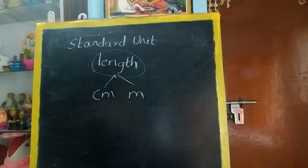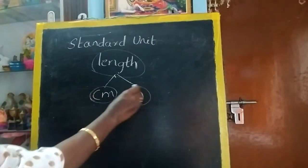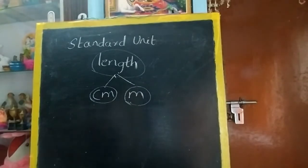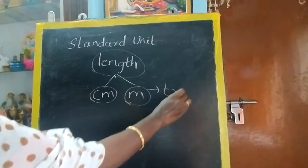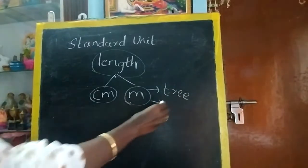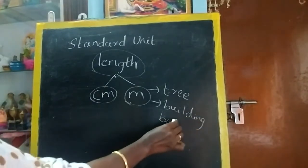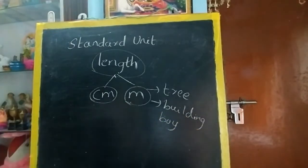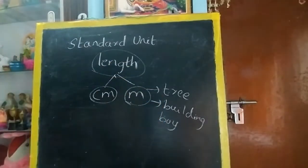Meter means you have to write m. You would have heard this — give me cloth of 2 meter, 3 meter. So this is centimeter and this is meter. Can you guess what things you will measure in meter? Which things will be very long? It can be a tree, it can be a building, it can be even a boy or girl — though that can also be measured in cm. So slightly longer objects will be measured in meter.